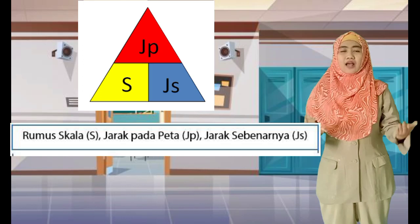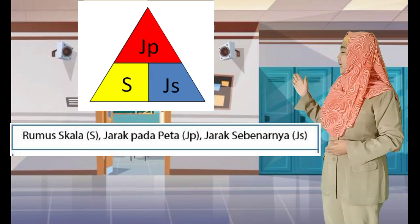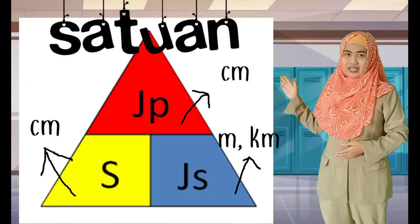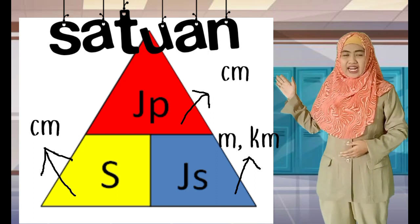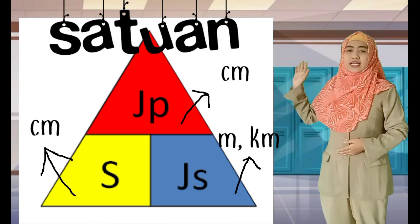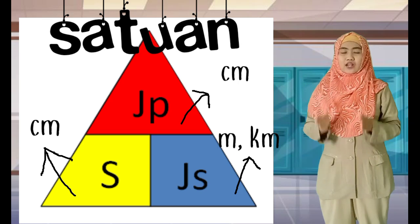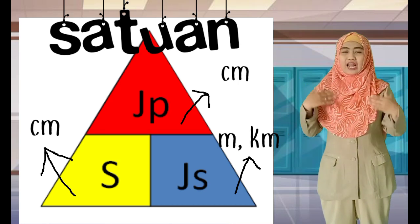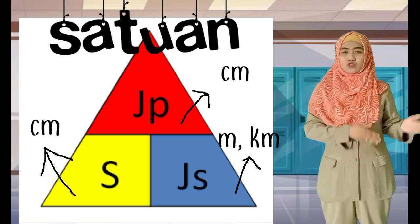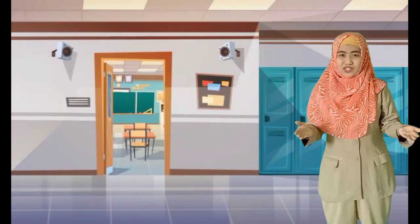Sebelum kita masuk ke cara menghitungnya, kita lihat dulu satuannya. J-P atau jarak pada peta satuannya sentimeter. Skala satuannya sentimeter. Sekarang jarak sebenarnya, satuannya bisa meter atau bisa kilometer. Jadi kalau kalian menjumpai satuannya masih sentimeter, berarti harus diubah dulu ke meter atau kilometer.